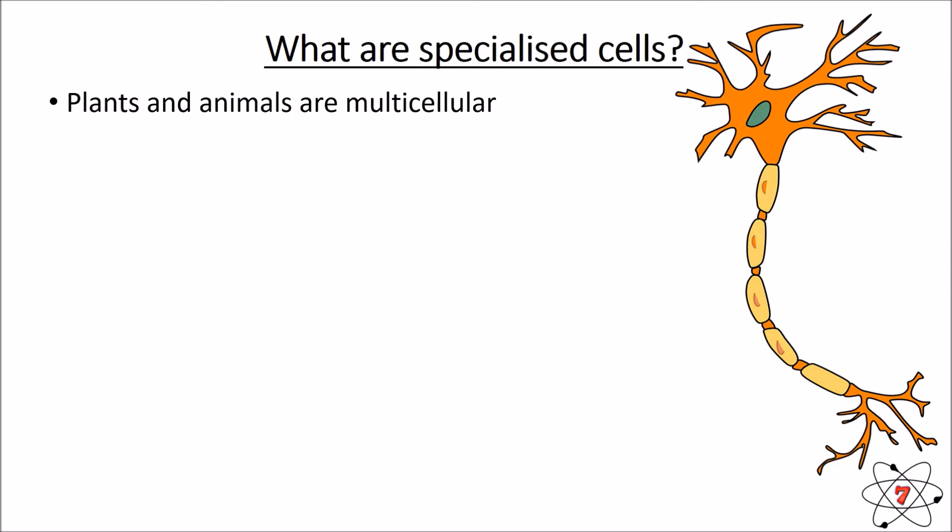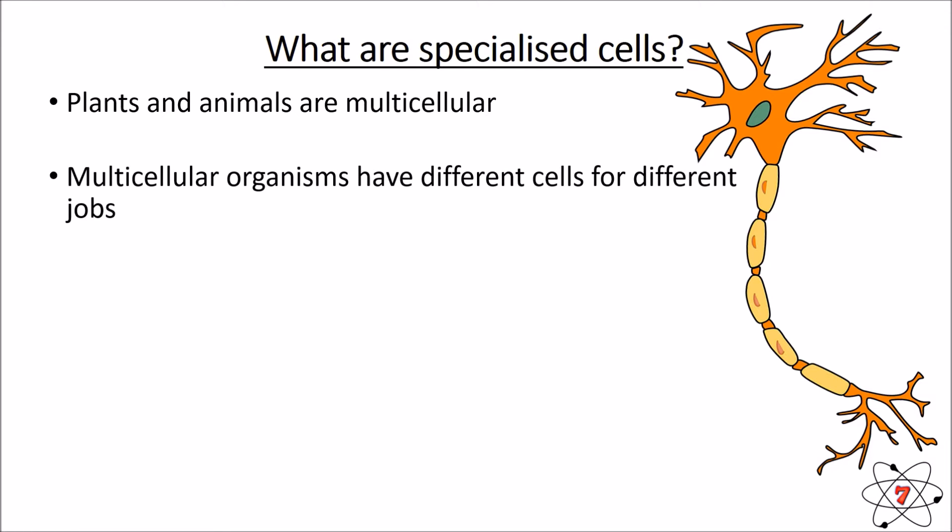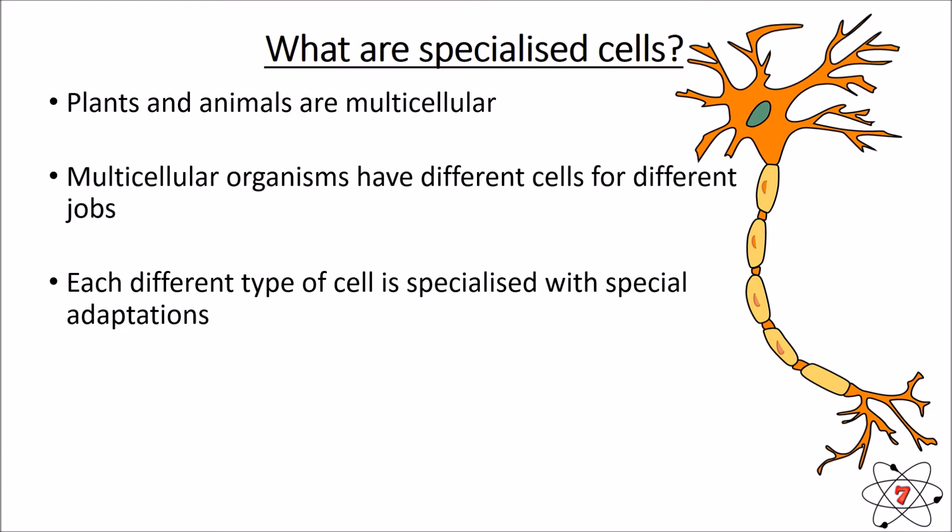What are specialized cells? It's important to remember that plants and animals are multicellular — they are made up of lots and lots of cells. Some living things are unicellular, like bacteria, which only contain one cell. In multicellular organisms, different cells have different jobs, and each job helps one of the seven life processes — remember Mrs. Gren. Each type of specialized cell is adapted, meaning it has special features to do its job. Specialized cells tend to look different because they do different jobs, like how a hammer looks different from a saw in carpentry.